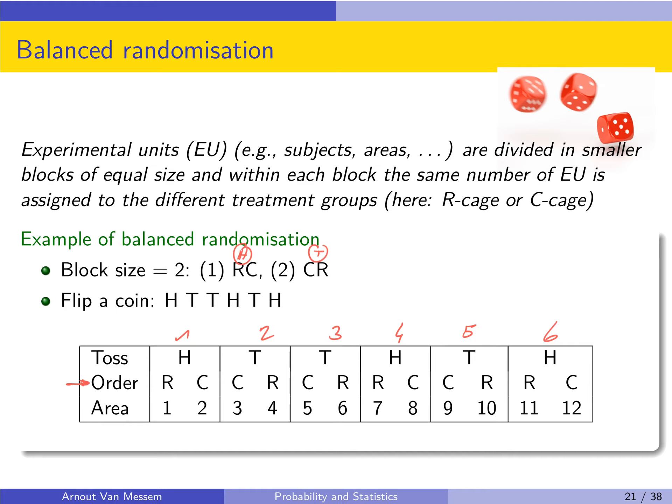So we flip a coin. We get head, tail, tail, head, tail, head. So it means that in the first block we set them in the order RC. In the second block we put them as tails, so as a CR, and so on.